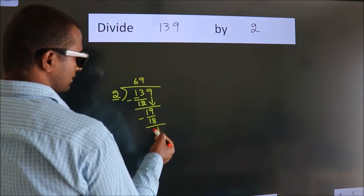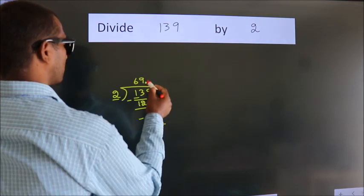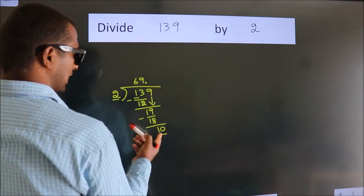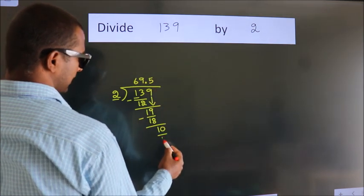After this, no more numbers to bring it down. So what we do is, we put dot take 0. So 10. When do we get 10? In 2 table, 2 5's, 10.